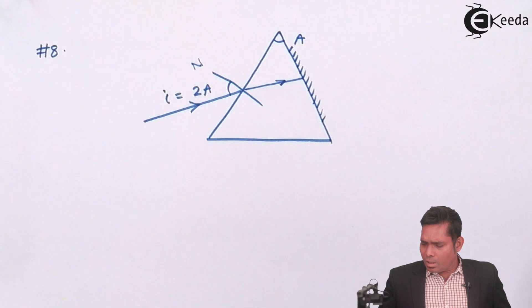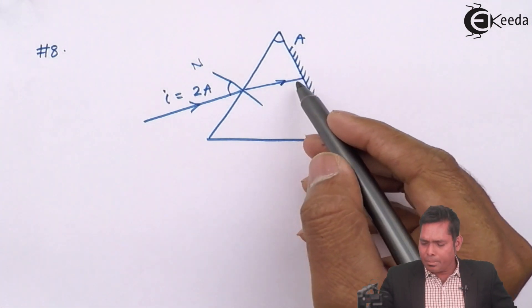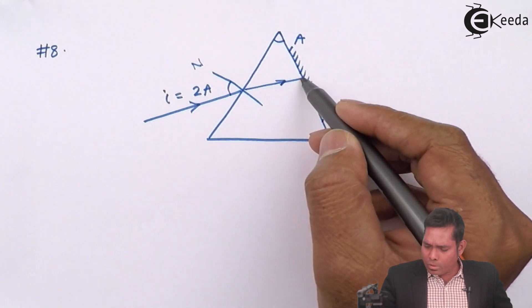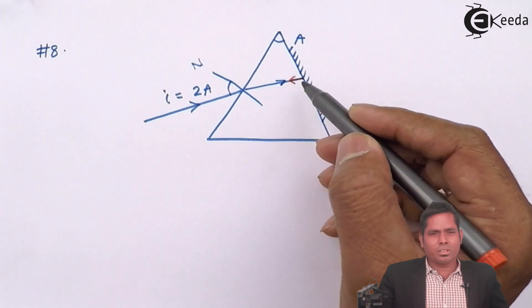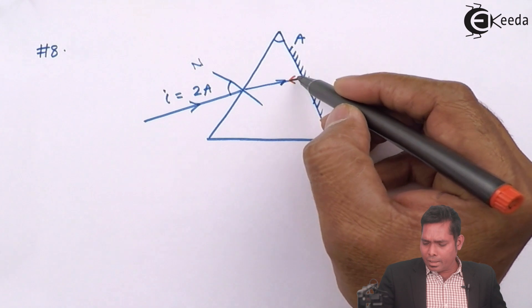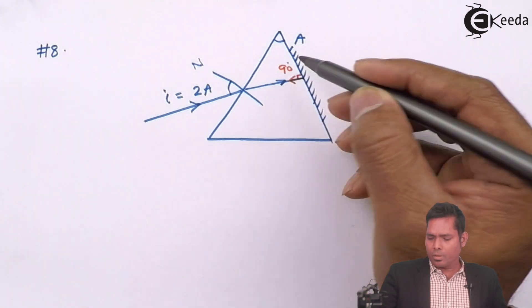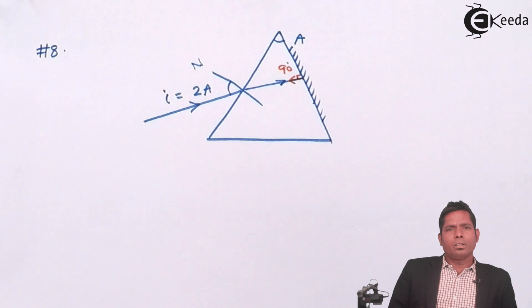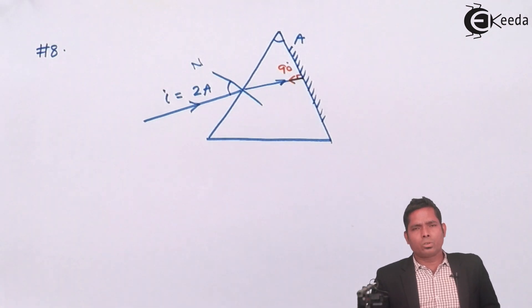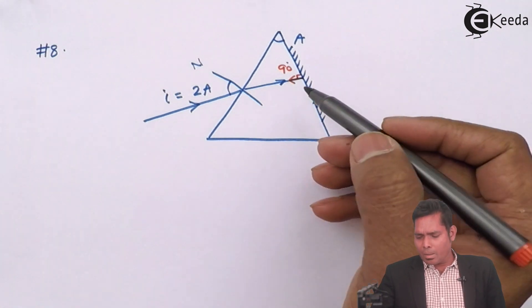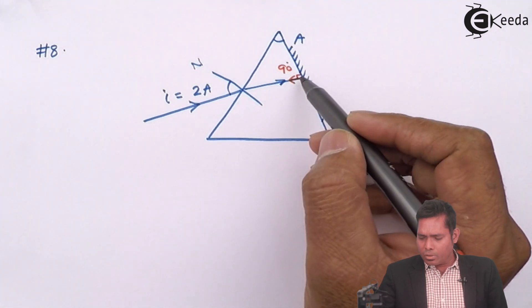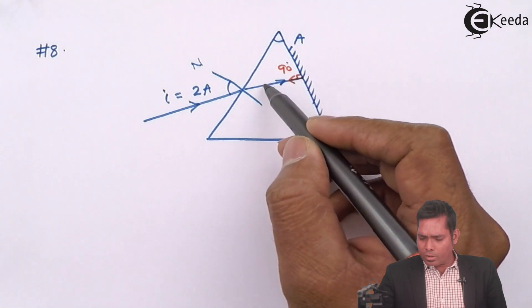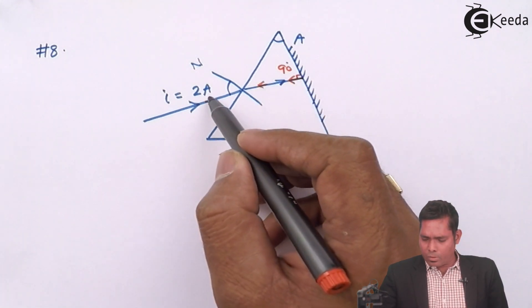This is how the ray is reflected in this medium and it follows the same path. If it follows the same path, the angle here should be 90 degrees. Only when the ray is sent back normally will it follow the same path. So this angle is 90.